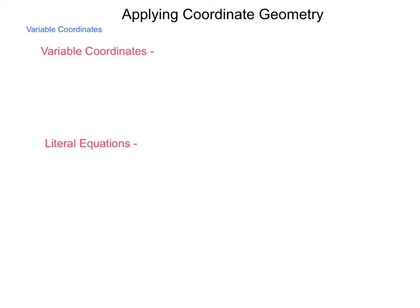Now that we have a start of using coordinates and the coordinate plane in geometry, we're going to take a look at how we can apply these coordinates in order to complete proofs and establish locations of our geometric figures. In order to do this we need these items: variable coordinates and the use of literal equations.